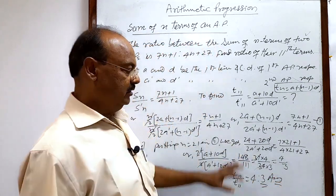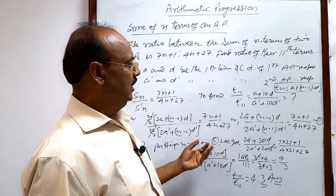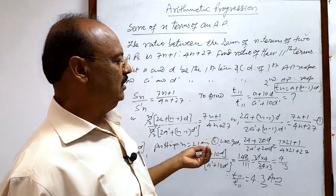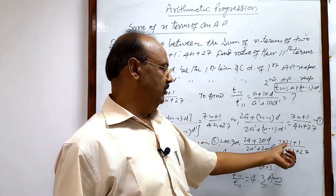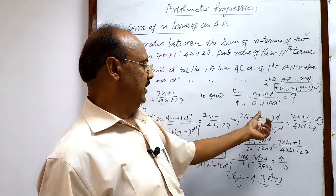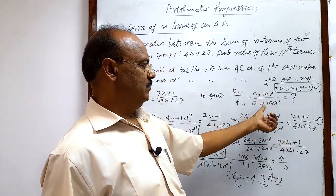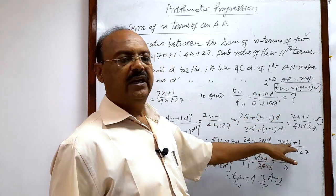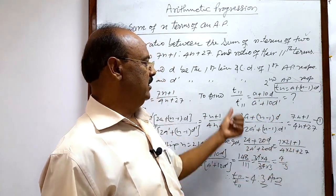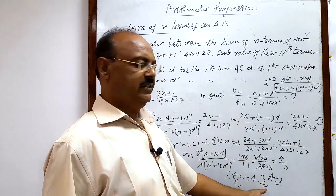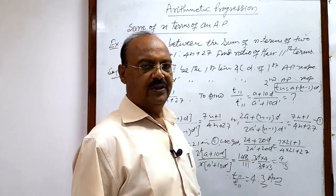The solution is very simple. The small trick here is that we put n = 21 to get (a + 10d) / (a' + 10d'). After substituting n = 21 and simplifying, we get the ratio very easily. Thank you, and wish you all the best.